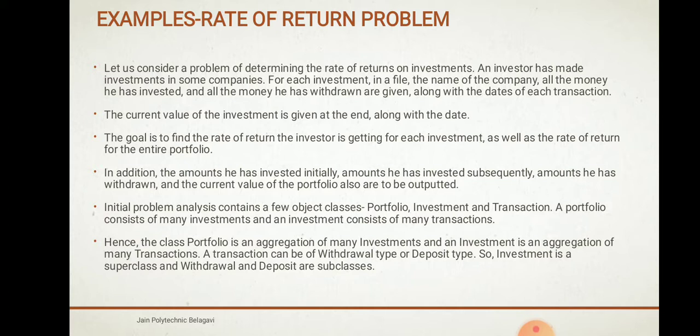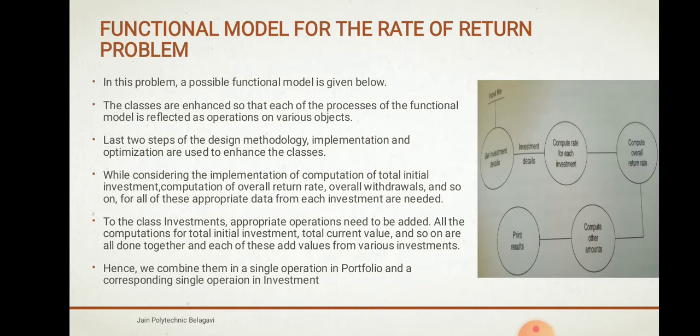In addition, the amount invested, the amount subsequently withdrawn, and the current value of the portfolio are outputted. The class Portfolio will be an aggregation of many investments, and Investment will also be an aggregation of many transactions. A transaction can be a withdrawal or deposit type. So Investment is a superclass and Withdrawal and Deposit are the subclasses. This can be a functional model for the rate of return problem, where classes are organized so that each process of the functional model is reflected as an operation on various objects.